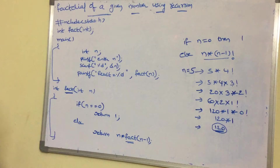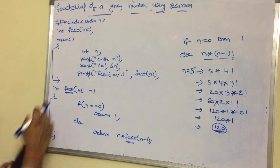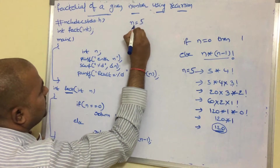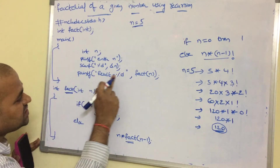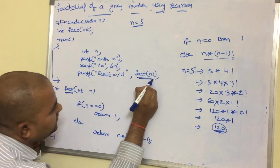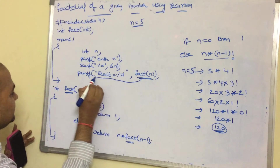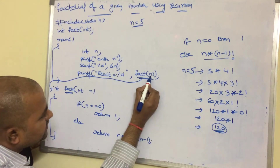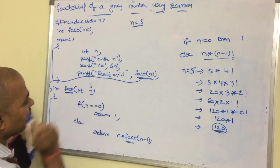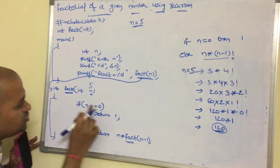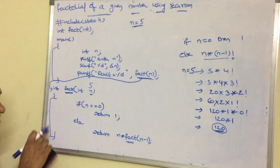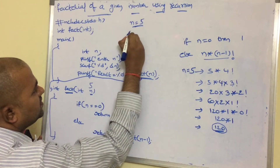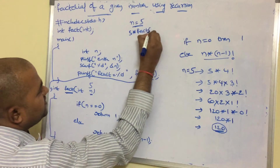Let us see how this program will be executed. Execution starts from the main function: printf enter n, scanf %d &n. Let n value be 5. So printf result is equal to %d, fact(n) — this statement is a function call. Whenever a function is called, control is transferred to the function definition. n value is 5, so 5 is passed to n. Checking condition: 5 == 0 is false, so the else block executes: return n * fact(n-1), which is 5 * fact(4).